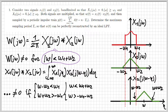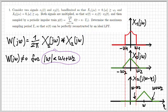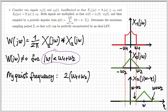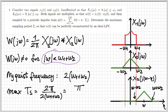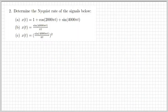The Nyquist frequency is twice the maximum frequency of the spectrum, so the maximum sampling period Ts is given by 2π divided by the Nyquist frequency. The result is simply Ts = π / (ω1 + ω2). This means we need to sample w(t) by taking samples every π/(ω1 + ω2) seconds or more often. If we take fewer samples we will lose information and it will not be possible to reconstruct the signal.